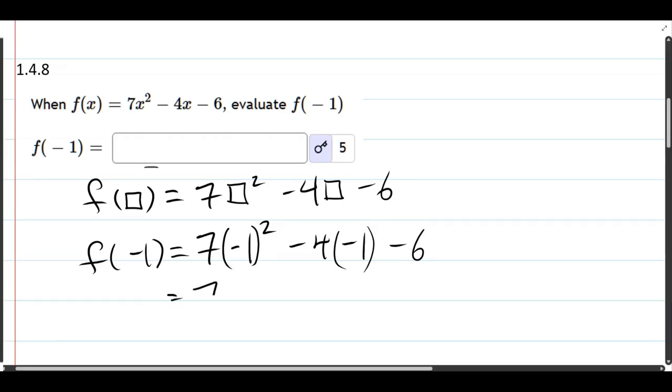Alright, negative 1 squared is 1. So it's 7 times 1. Negative 4 times negative 1 is positive 4 minus 6. So 7 plus 4 minus 6 is 5.